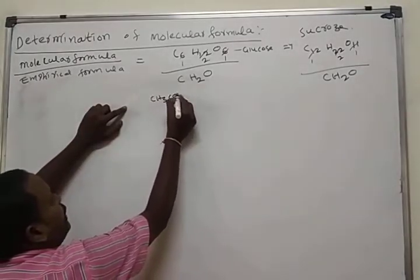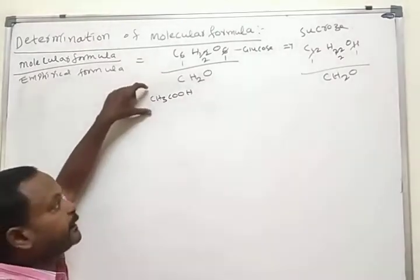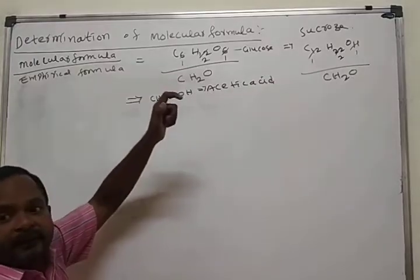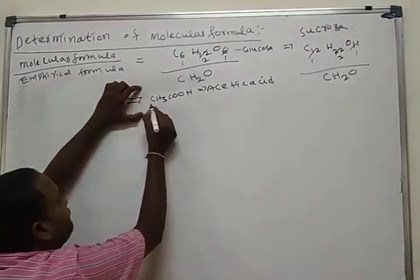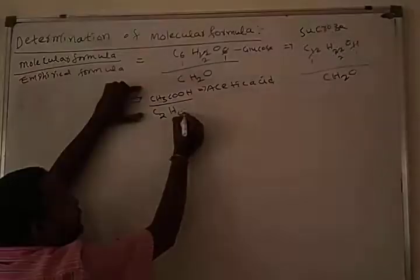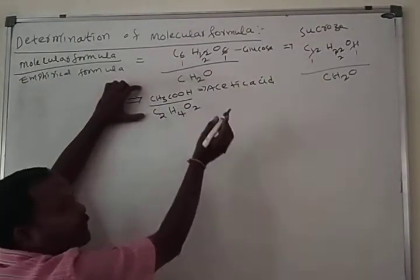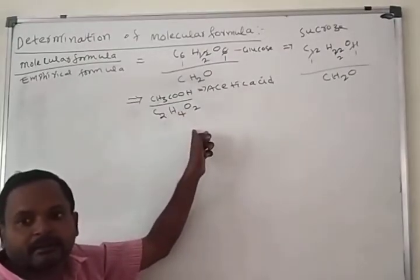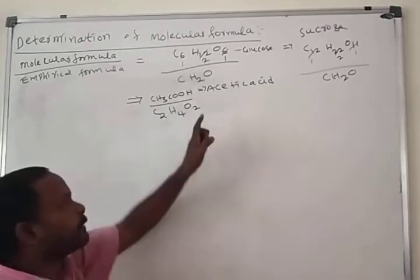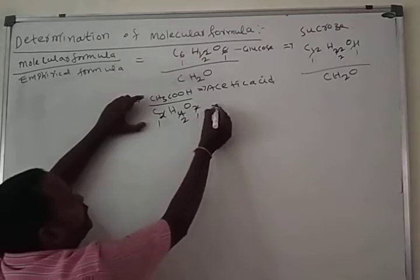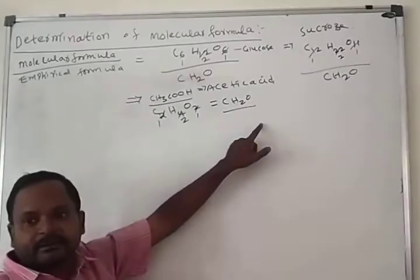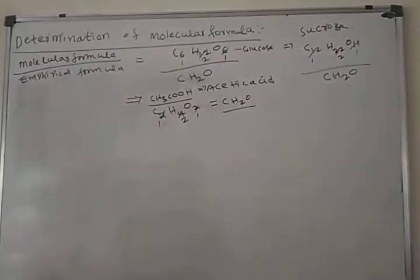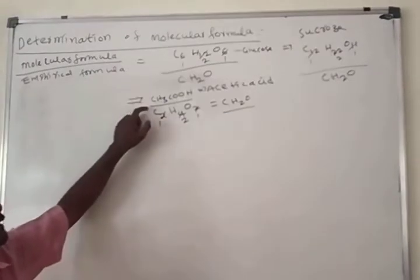Next example: acetic acid, CH3COOH. The exact atoms present in one molecule — how many carbons? 2 carbons. How many hydrogens? 4 hydrogens. How many oxygens? 2 oxygens. These are the exact atoms present in a molecule, so this is the molecular formula of acetic acid. The empirical formula: dividing by 2 gives CH2O — that is the empirical formula of acetic acid.